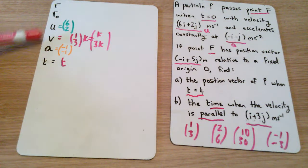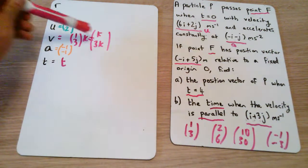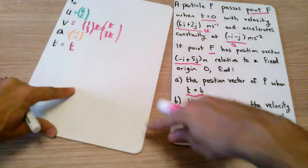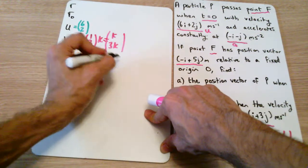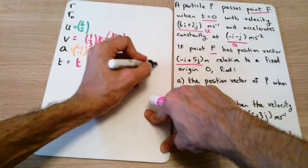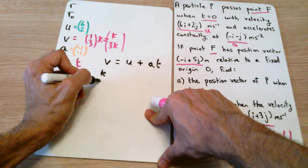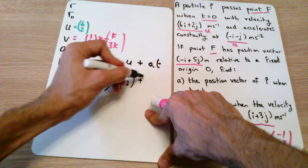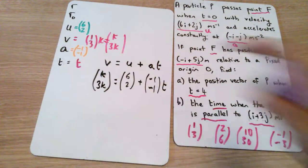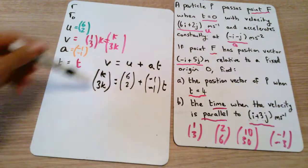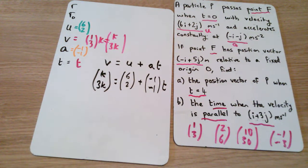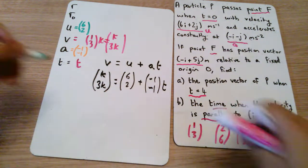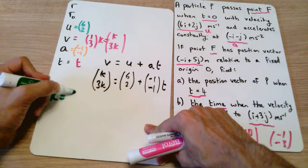We're going to be doing SUVAT here. We've got v, u, a, and t. So we can use v equals u plus at. We've also got two unknowns here. If we have two unknowns, we are simply going to be making simultaneous equations. So we have v is equal to u plus at. v is k and 3k is equal to u, which is 6 and 2, plus a, which is minus 1 and minus 1, times t. What we've got here are i vectors along the top and j vectors on the bottom. The i vectors only affect the i vectors and the j vectors only affect the j vectors. So I can create an equation here from each line. I could say k is equal to 6 minus t. And I could say 3k is equal to 2 minus t.